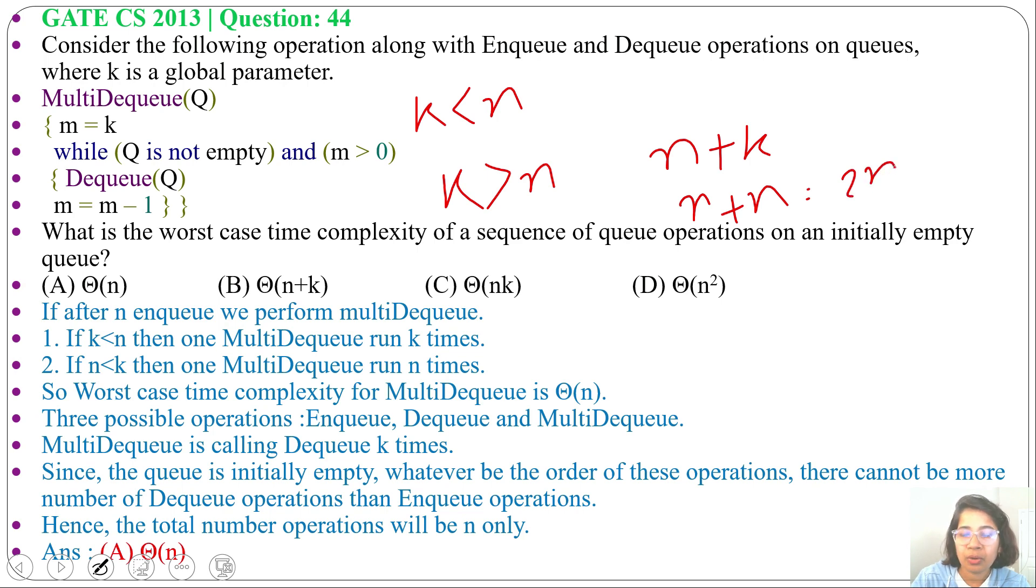Suppose we will do N enqueues, then N dequeues. So N plus N, it's 2N. Suppose we will do N enqueues, one multi-dequeue, so running time is K. Let K value is less than N and 2 dequeues. So K plus 2. This K and 2 are some constant, that's why theta of N. Anyway, we are getting theta of N. In any sequence, we are doing enqueue, dequeue and multi-dequeue.